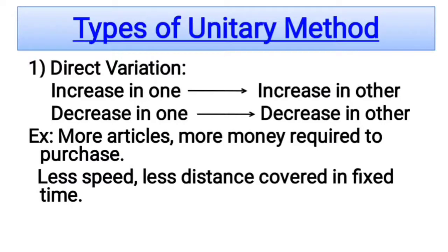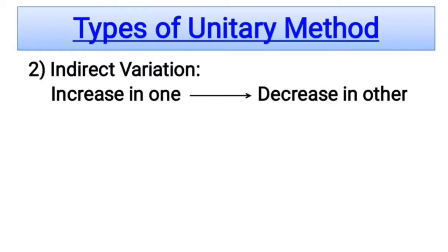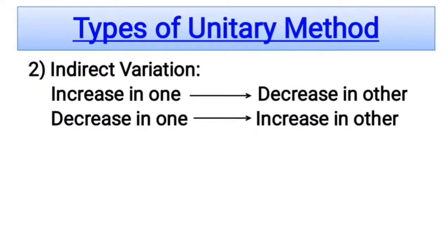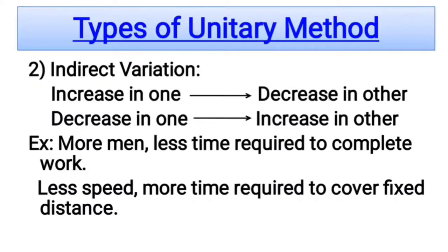Indirect variation is opposite to direct variation. Here, increase of one value decreases the other, and decrease of one value increases the other. For example, more money means less time required to complete work — if there is more money, work can be completed in less time; if there is less money, more time is required. Similarly, less speed means more time required to cover a fixed distance; if you increase speed then you require less time. So this method is known as indirect variation.